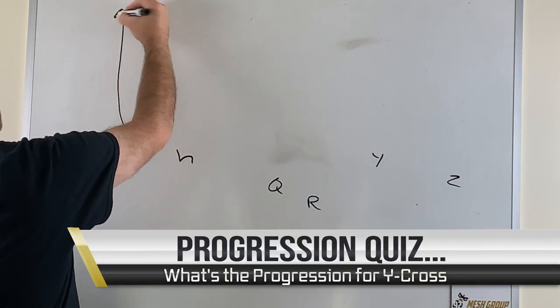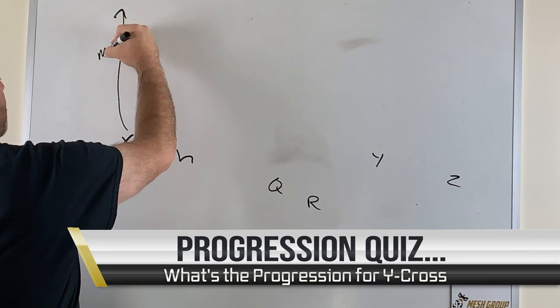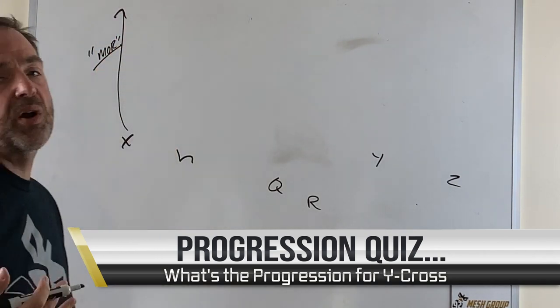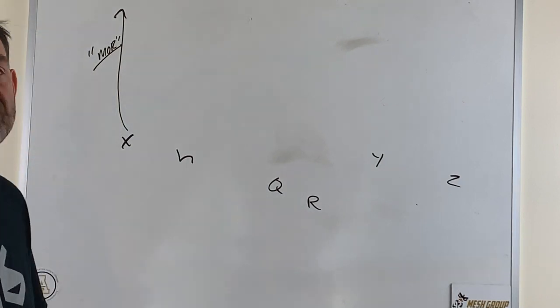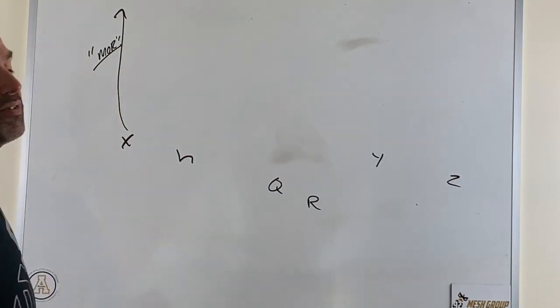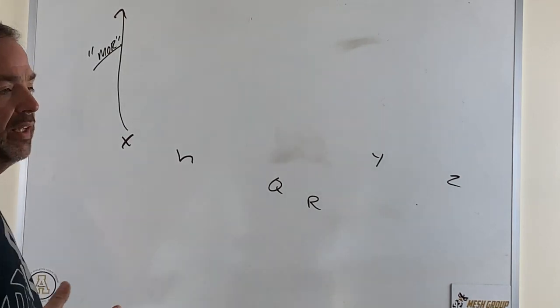X obviously is going to have a more route, and that's kind of the key on that. If you've already taught six calls, then it's pretty easy, but we just tell him he must outside release. He has to outside release on that deal.